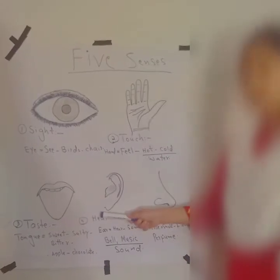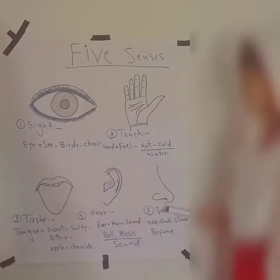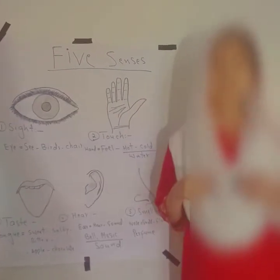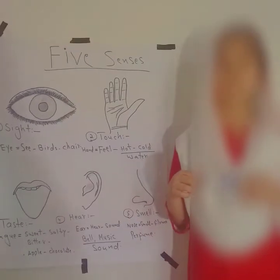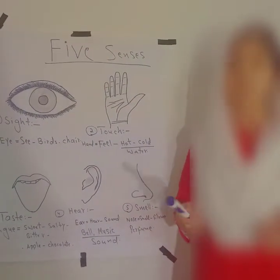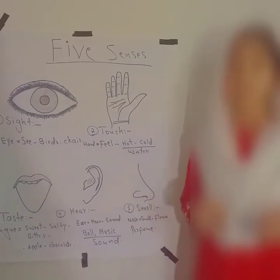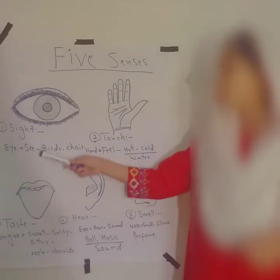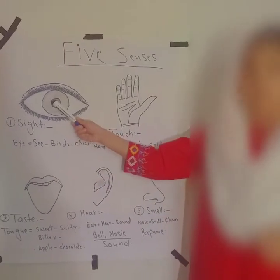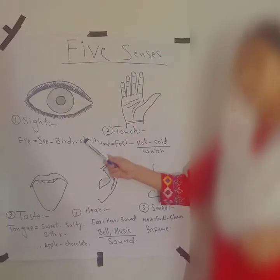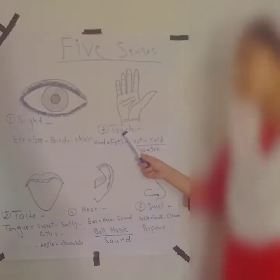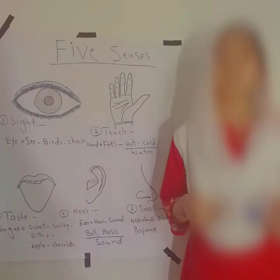The five senses are: sight, taste, hearing, smell, and touch. Sight — it is a sense through which we can see things. For example, we can see birds with our eyes. We can see a chair with our eyes.